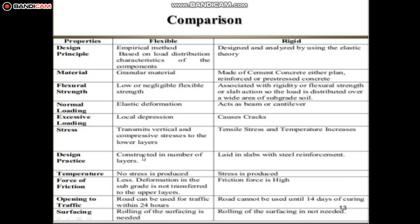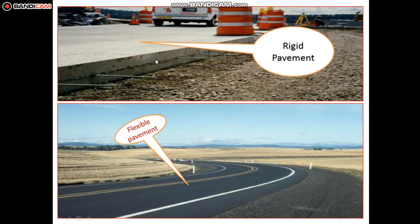Sixth, design practice — flexible pavement is constructed in a number of layers, while rigid pavement is laid in slabs with steel reinforcement. Seventh, temperature — flexible pavement produces no stress, while rigid pavement produces stress. Eighth, friction force — in flexible pavement, deformation in the subgrade is not transferred to the upper layers, while in rigid pavement, friction force is high. Regarding opening to traffic — flexible pavement can be used within 24 hours, while rigid pavement cannot be used until 14 days of curing. Also, rolling of the surfacing is needed for flexible pavement but not for rigid pavement.